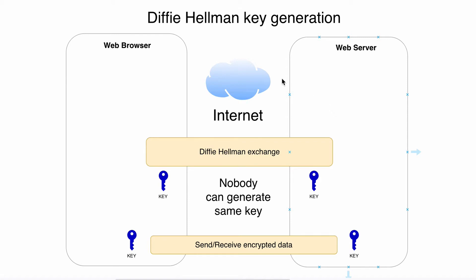Let's suppose that there are two sides — for example, a web browser and a web server — but in fact those two sides can be any two computers in the world. They are connected over the internet, over an insecure connection. All packets on the internet can be intercepted by anyone, like we do using Wireshark, and if intercepted data contains sensitive information it can be used for harmful purposes.